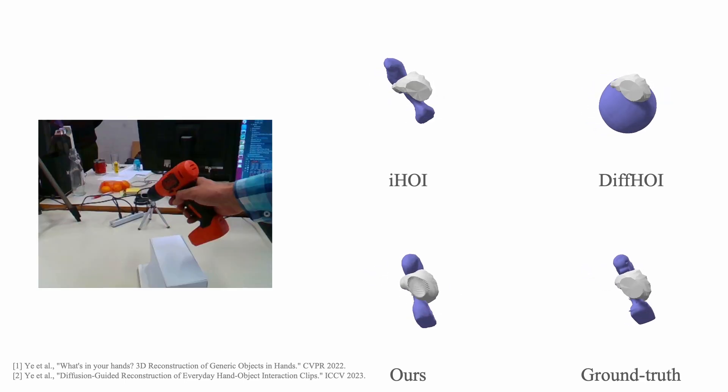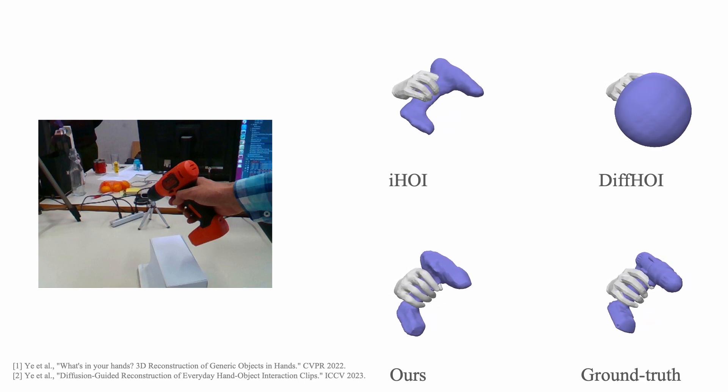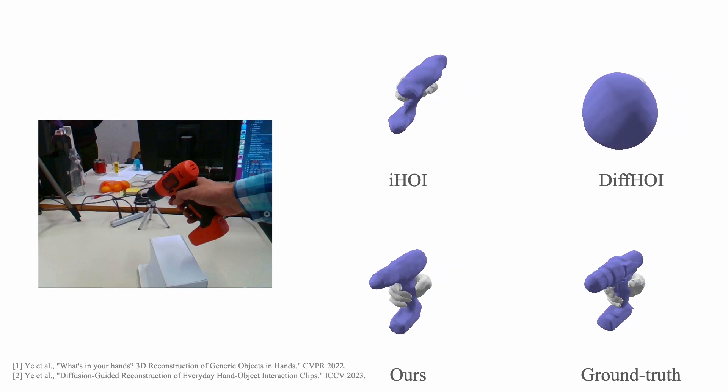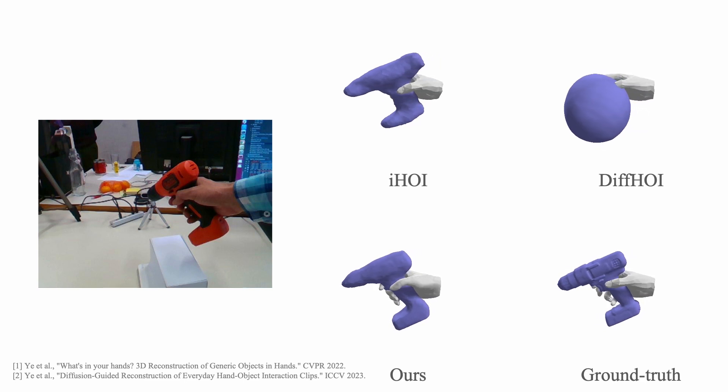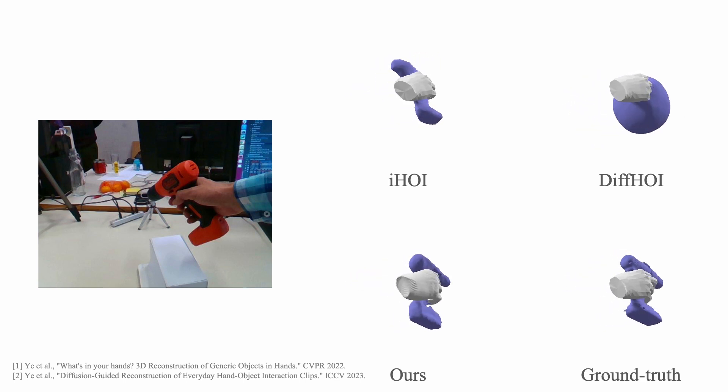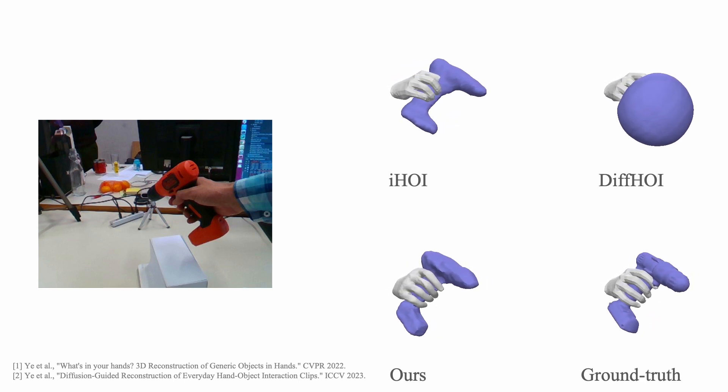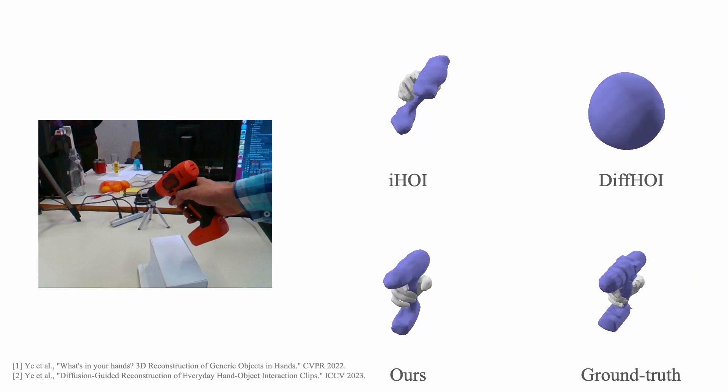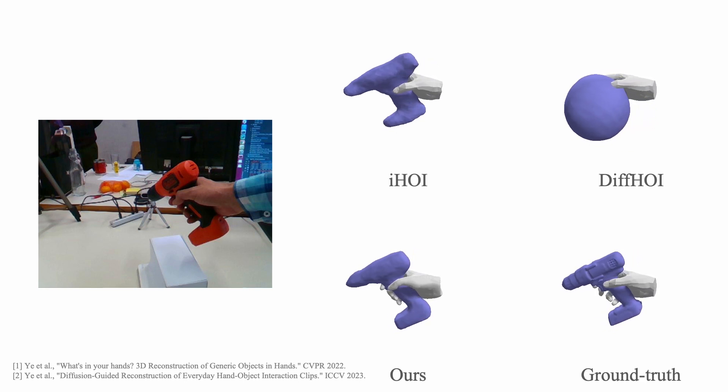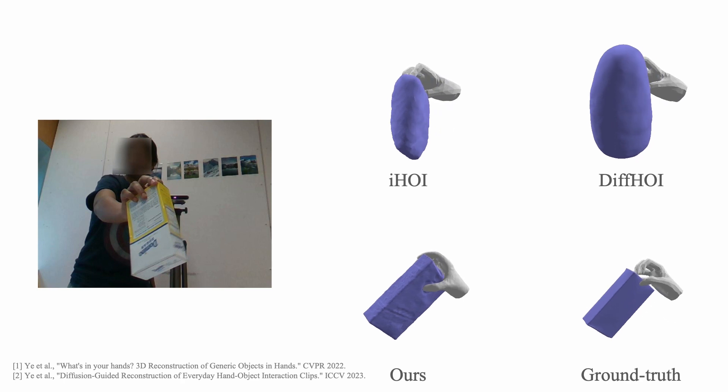Here we compare methods on unseen training categories from DIF HOI. Since IHOI has seen this object during fully supervised training, it provides a rough shape of the object. In contrast, DIF HOI fails to reconstruct objects in the unseen category. The reconstruction of our method, on the other hand, more faithfully resembles the ground truth. Here is another example.